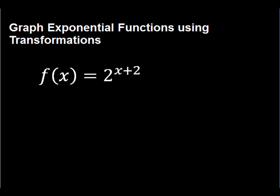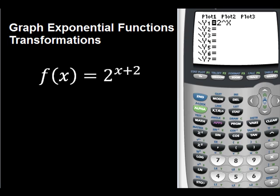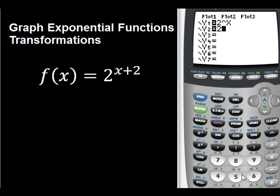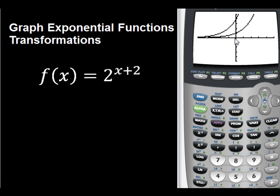Graph exponential functions using transformations. Hopefully you remember back to chapter 2 when we talked about transformations. We have x + 2, which is our x + h. That shifts the graph to the left 2 units. So the original function is 2^x. This new function's graph will be shifted two places to the left. Here's my 2^x, and I'm going to graph 2^(x+2) — and you're going to notice it has shifted over two places.